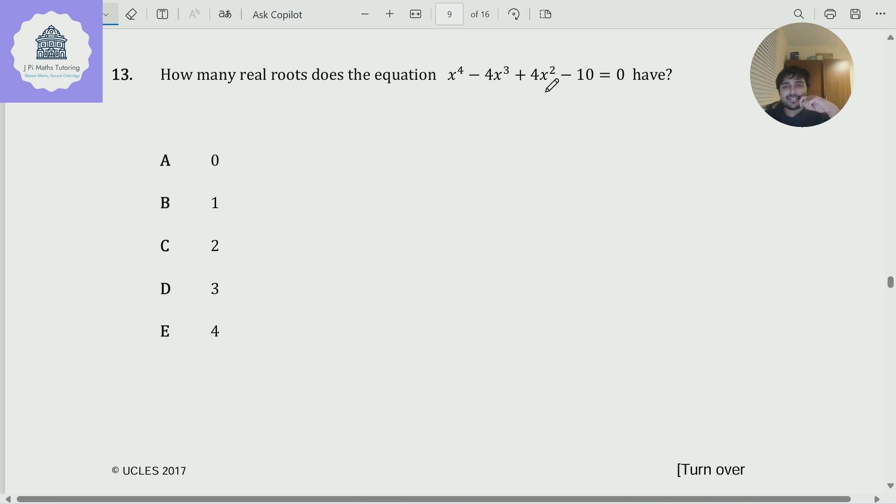So how are we going to solve this? Well, I notice here that apart from the minus 10, this is quite nice because I can take out an x squared from that. And if I do take out an x squared, it then becomes a quadratic. So this thing here is just x squared times x squared minus 4x plus 4. And then the minus 10, if I just shove that on the other side, I get equals 10.